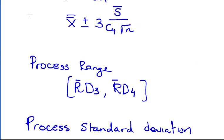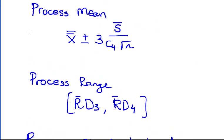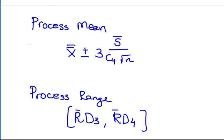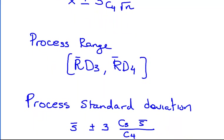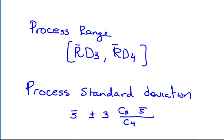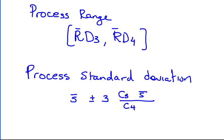I wrote out a couple of these formula here. So this is how you can compute the control limits. X double bar plus or minus 3 times S bar over C4 divided by the square root of N. Process range is R bar D3 times R bar D4. And the process standard deviation is S bar plus 3 times C5 over S bar over C4.